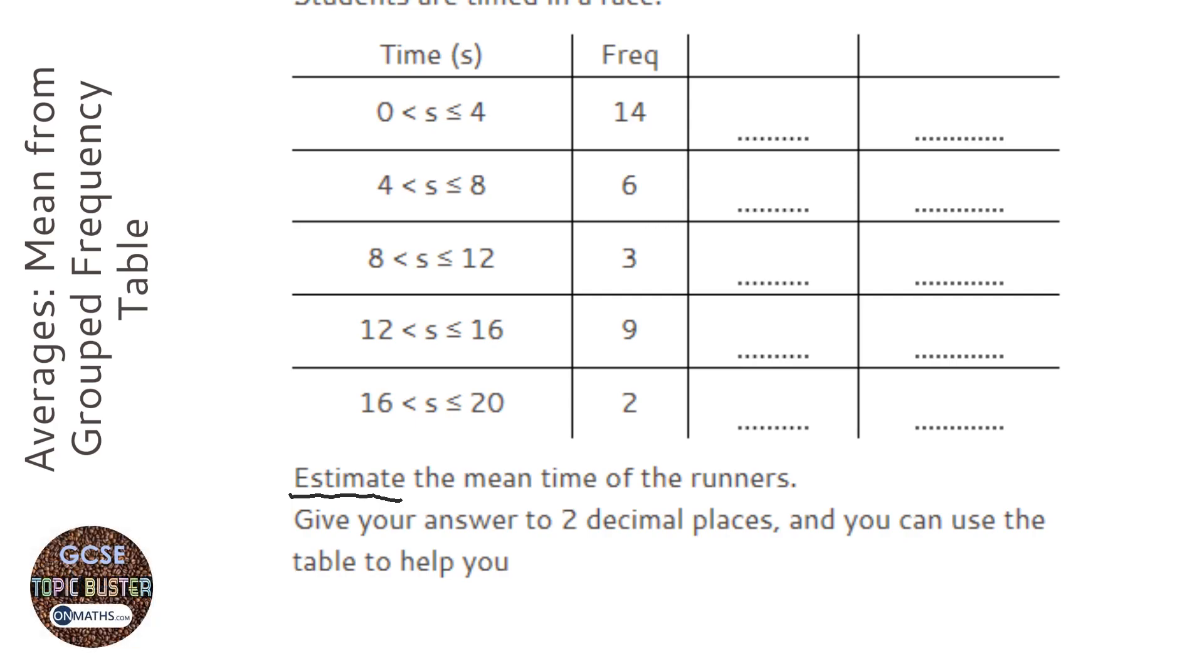So, we approach this the same as if it wasn't a group. However, we do have a group, so we've got to do a step first. This means that we've got a value somewhere between 0 and 4, including 4, but not including 0. Now, the problem is that the first step in this method is to multiply these two numbers together. But you can't times somewhere between 0 and 4 by 14.